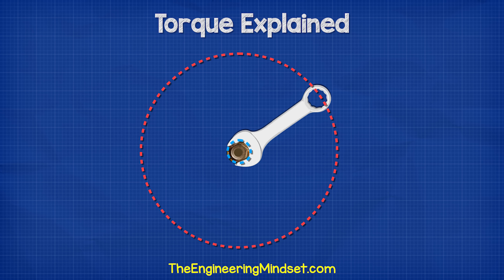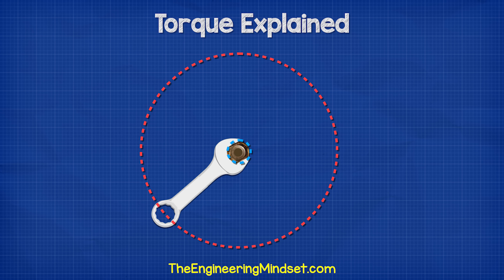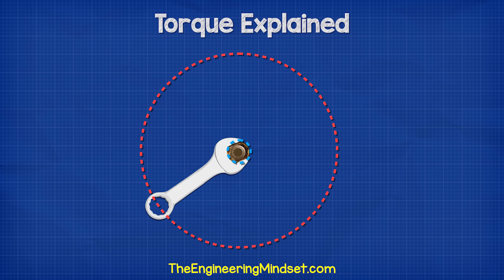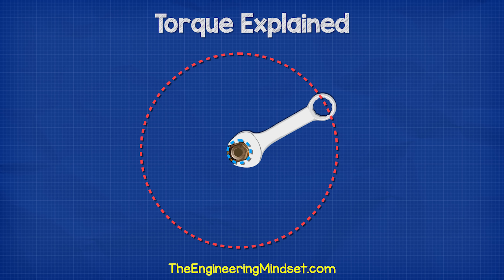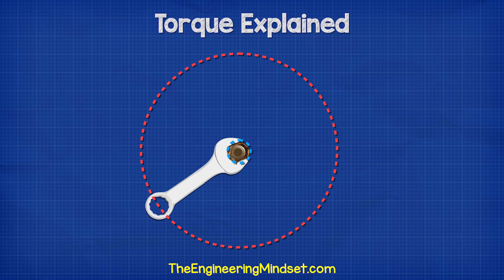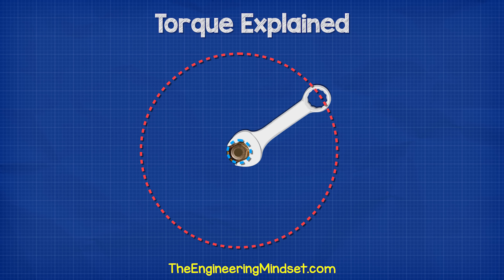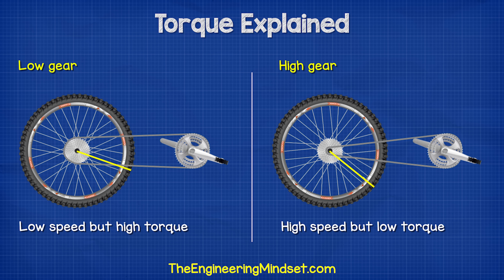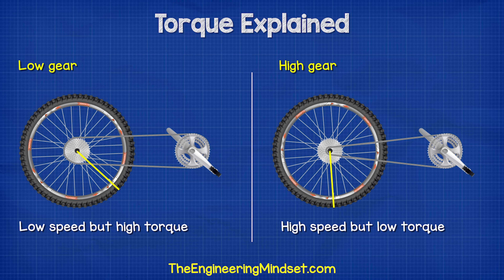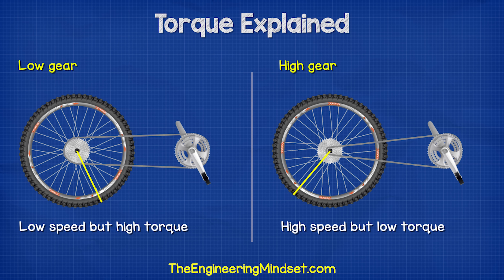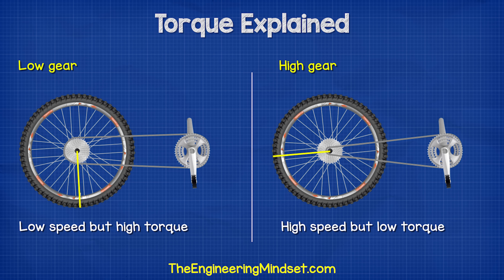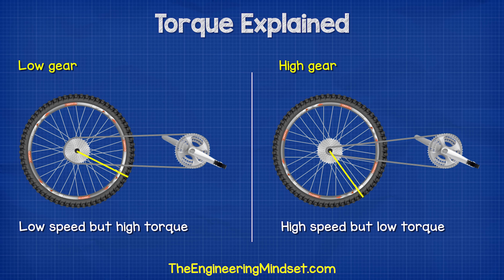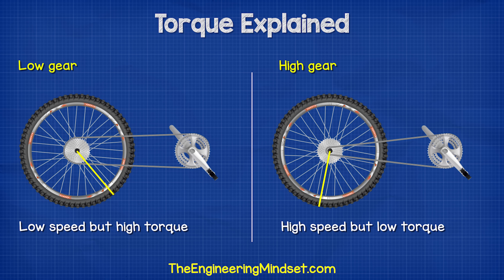Essentially, we're using a larger circle to turn a smaller circle. By changing the size, we change the speed and the torque. A low gear provides low speed but high torque, while a high gear gives high speed but low torque.